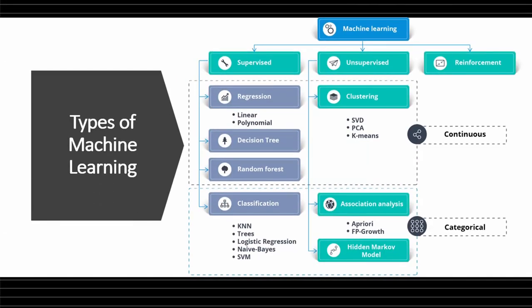Machine learning is divided into three types: supervised, unsupervised, and reinforcement learning. In supervised learning, you know well about the target variable and prediction outcome — all classification and regression algorithms fall under supervised learning. A classification problem applies when the output variable is categorical data, such as red or blue, or disease or no disease.